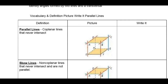The first thing we have is parallel lines. Parallel lines are coplanar lines that never intersect. So we can say that line EA is parallel to line BF. When you have arrows like that, that's a symbol for it. We can also say that line AD is parallel to line BC.